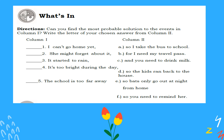From column one: number one, 'I can't go home yet'; number two, 'she might forget about it'; number three, 'it started to rain'; number four, 'it's too bright during the day'; number five, 'the school is too far away.' The answers: number one, letter B — 'for I need my travel pass.' Number two, letter F — 'so you need to remind her.'